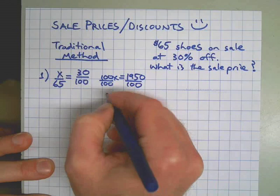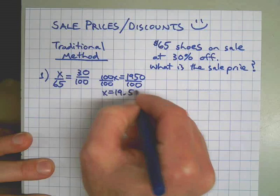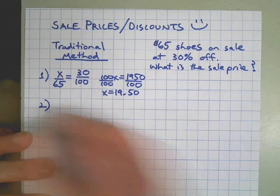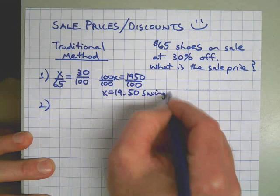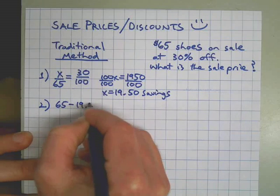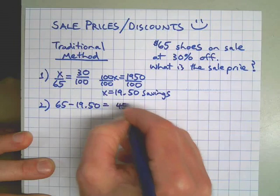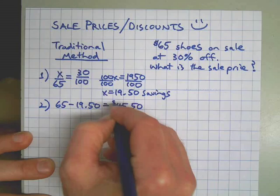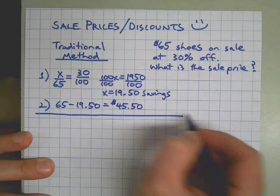Then in this traditional method, since that's our savings, we would need to subtract $19.50 from the original price to get our sale price of $45.50. Okay, that's one way of dealing with this type of problem.